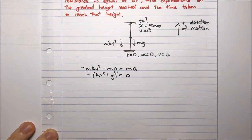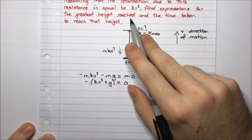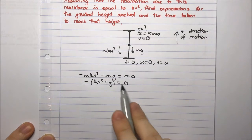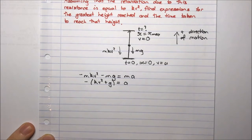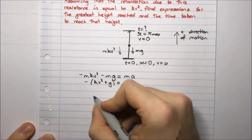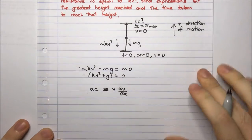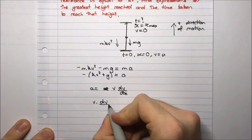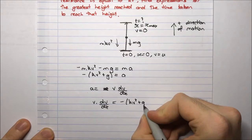We're looking for the greatest height, which is a distance, so we need to involve the variable x. We use the expression for acceleration that involves x: acceleration equals v times dv/dx. So v times dv/dx equals minus kv squared plus g.